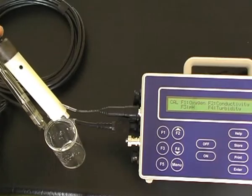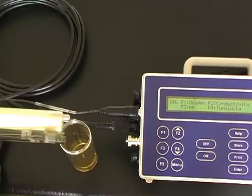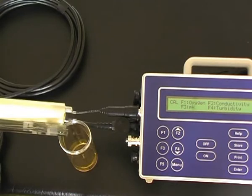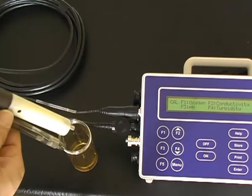Remove the sensors from the pH 4 solution and rinse both sensors with deionized water. Once rinsed, place both sensors, the pH sensor and conductivity sensor, in the second calibration buffer, pH 6.88 for calibration.